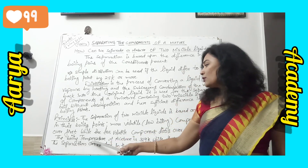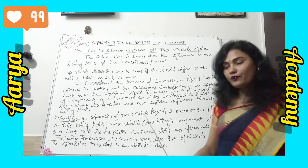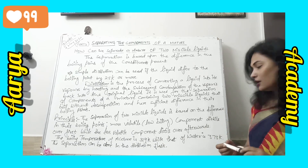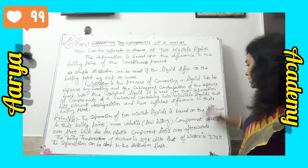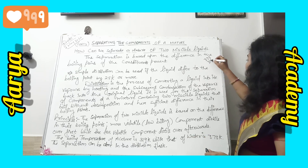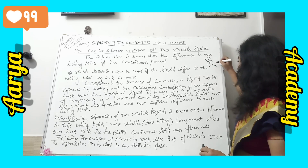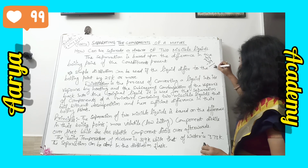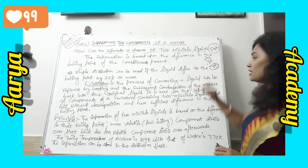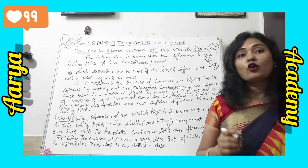The boiling temperature of acetone is 319 Kelvin while that of water is 373 Kelvin. If we subtract: 373 minus 319 gives us 54 Kelvin. Since 54 Kelvin is more than 25 Kelvin, we can separate this mixture using simple distillation.